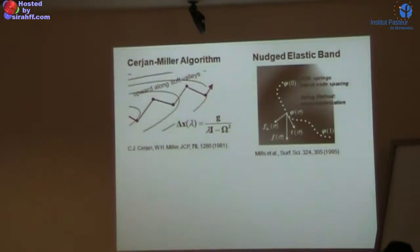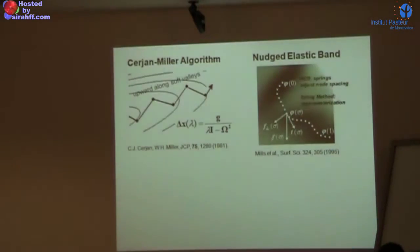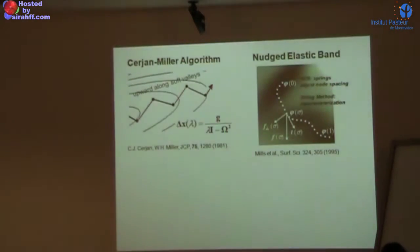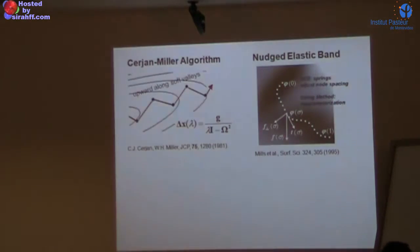We typically use transition state theory for processes where you're breaking one bond and forming another, and on those angstrom-level displacement scales, the no-recrossing assumption is pretty good. We talked about algorithms for implementing this. Miller's algorithm, while not particularly practical, launched a whole field. If you've read Bill Miller's semi-classical theory work, it's difficult but beautiful. He came down to earth and told everyone how to find transition states, then stepped away and launched a whole field. The nudged elastic band also set a lot of things in motion in string method algorithms — that was Hannes Jonsson.